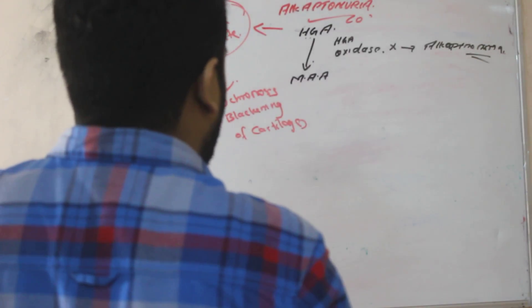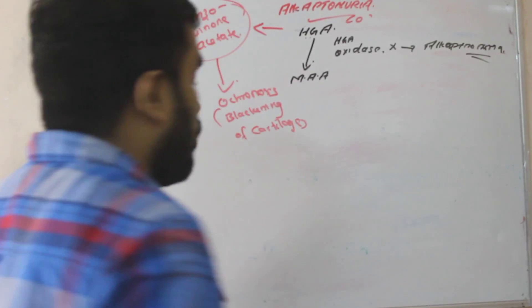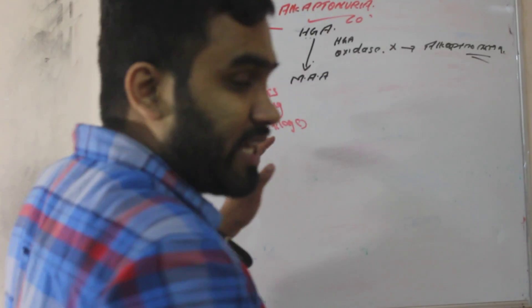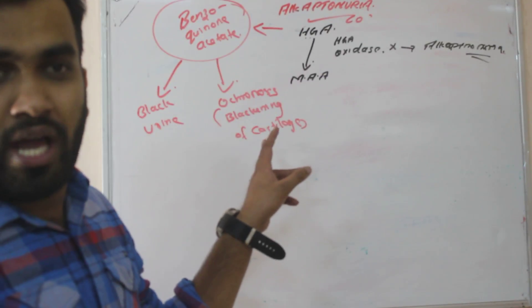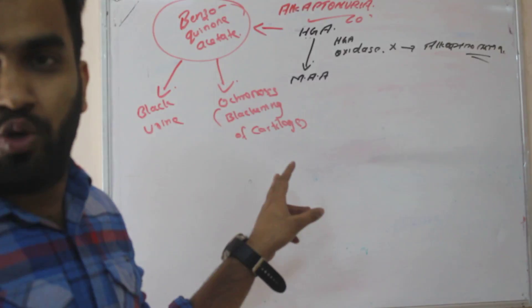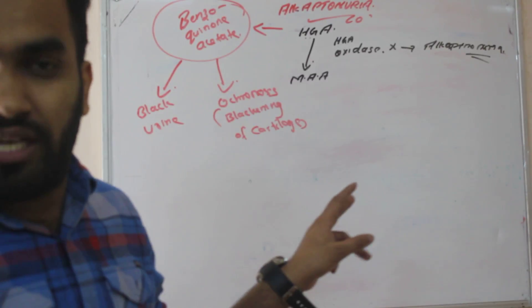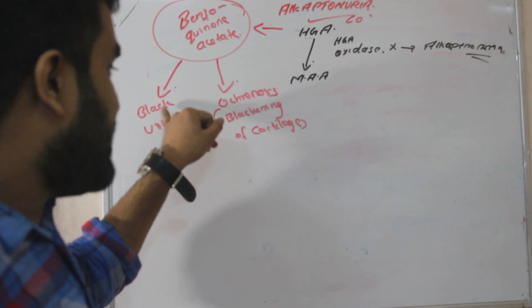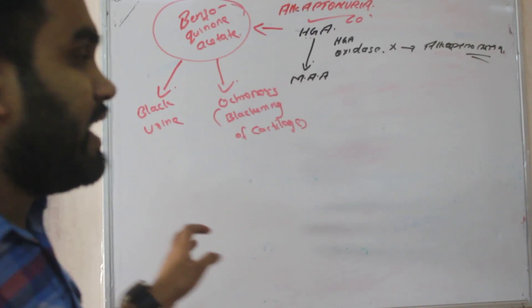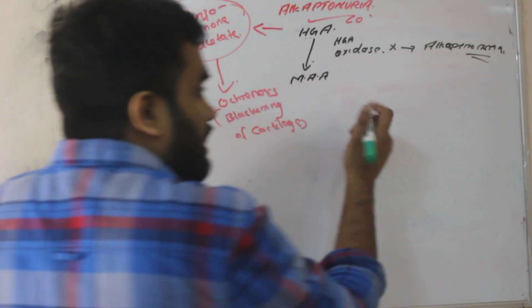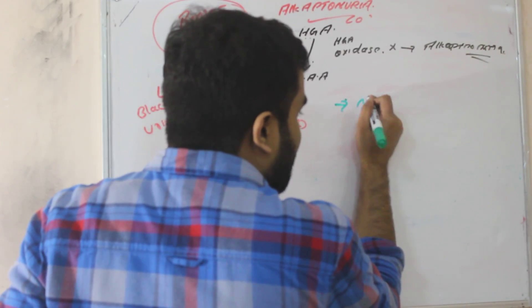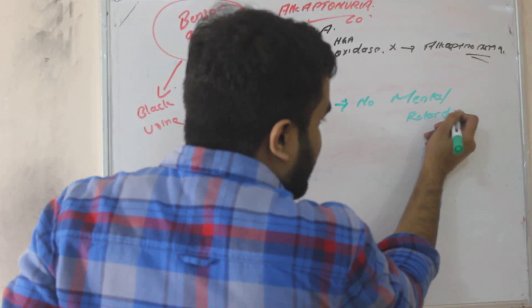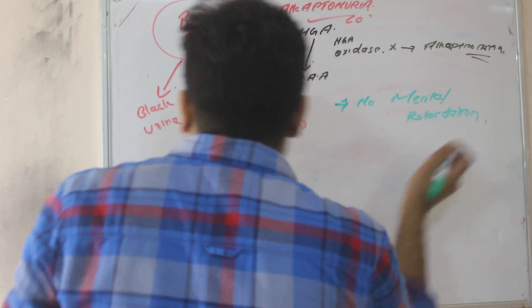Now we'll see what tests we are doing in alkaptonuria. Same like phenylketonuria. We have discussed in my phenylketonuria video the ferric chloride test. Here we can specifically see the black urine. The other thing is, here you can look, you can't see any mental retardation. Very important point. There is no mental retardation here in alkaptonuria.